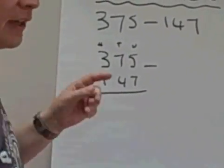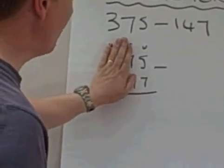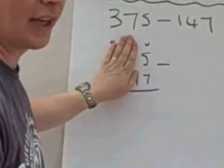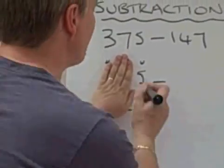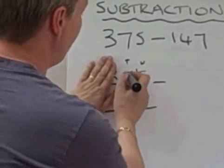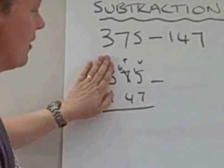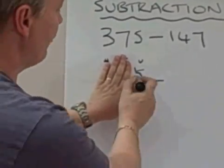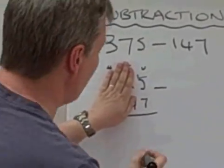And the first thing I'm going to do is use my finger or use my hand and cover that. And I've got five. I want to take seven away. I can't. So I'm going to make that 15. And because I've borrowed that 10, that 7 now becomes a 6. So the question is 15 take away 7, which is 8.